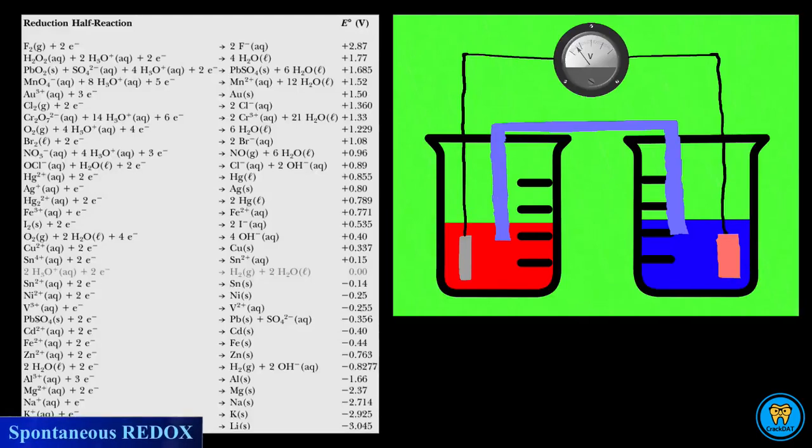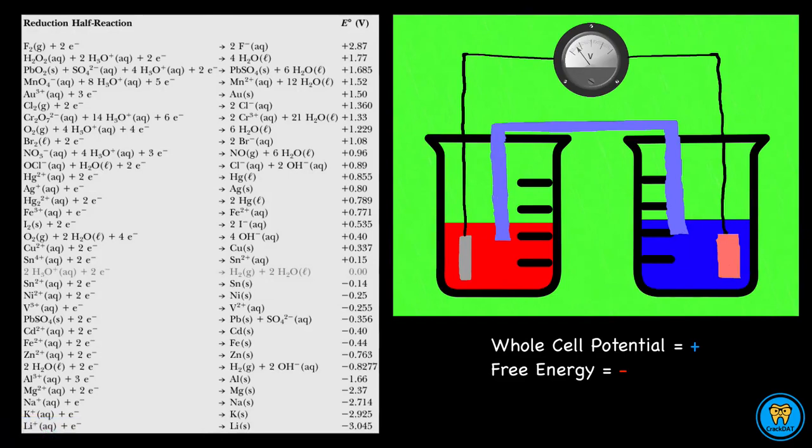If the potential of a whole cell is positive, then the free energy change is going to be negative. This would mean that the redox reaction is spontaneous.